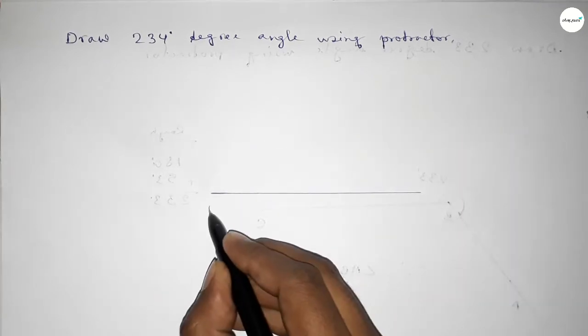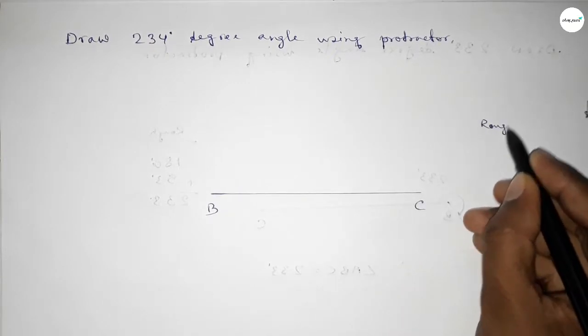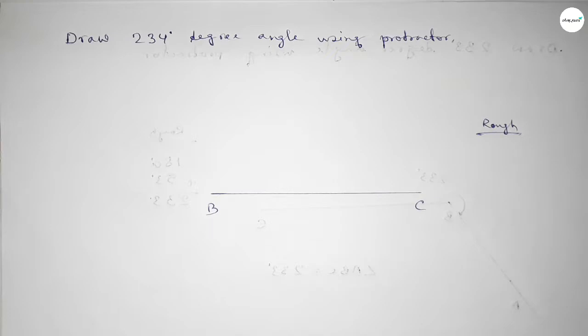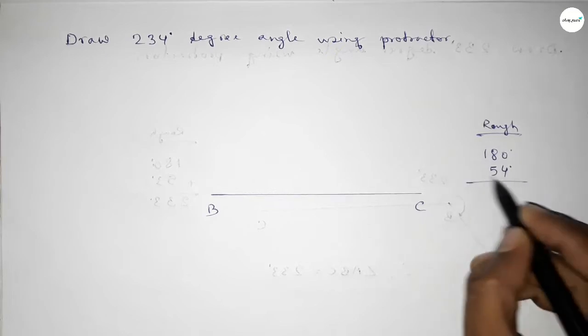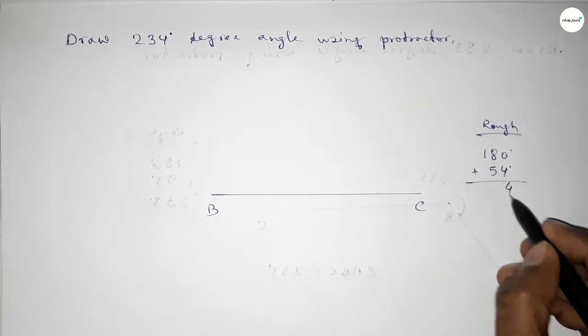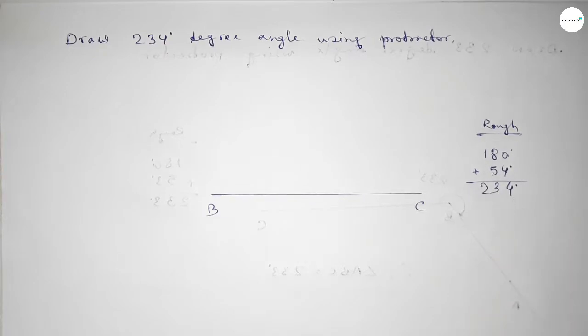Taking here point B and here C. Now roughly discussing some calculation here: if we add 54 degree angle with 180 degree, then we can get 234 degree. So this is 4, 13 carry 1, so 2.